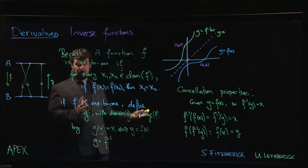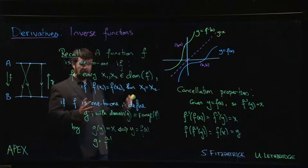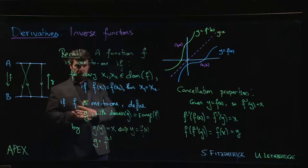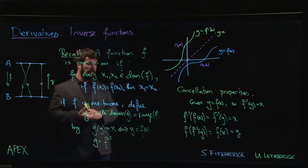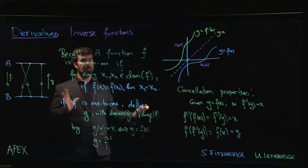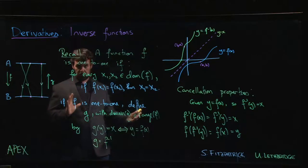So the way you should probably think of the inverse is it's sort of like an undo button. Whatever the original function did, the inverse is going to undo it and get you back to where you started. So we'll look at a couple of examples of functions, we'll show that they're one-to-one, we'll find their inverses, and then we'll move on and talk about derivatives.